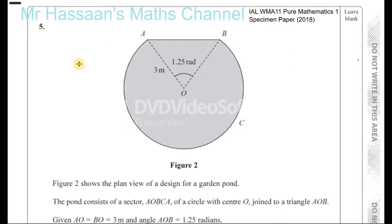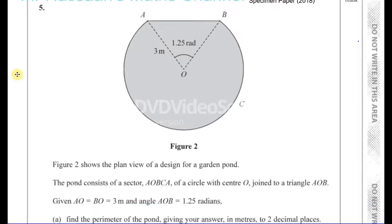We're told that this shape is a design for a garden pond. The pond consists of sector OABCA, center O, and triangle AOB joined together. Given that AO and BO are both 3 meters, and angle AOB is 1.25 radians, find the perimeter of the pond, giving your answer in meters to two decimal places.